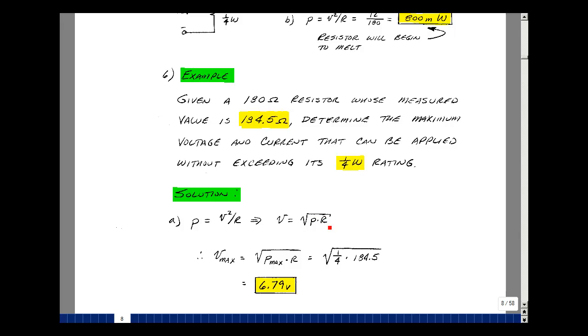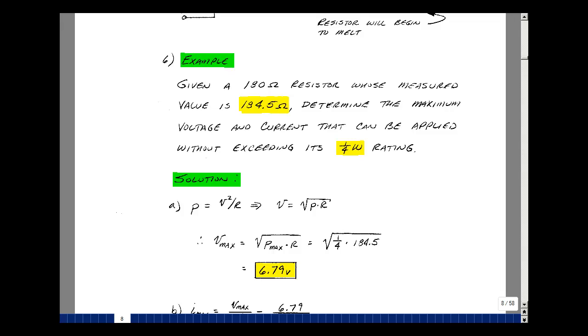Now, if I know the value is 184.5, then the maximum would be when the power is maximum, which would be the quarter-watt rating. That turns out to be about 6.79 volts. So if I have a circuit that has a power supply in it that's only 5 volts, then I could never get this much voltage across it, and I wouldn't have to worry about destroying the resistor.